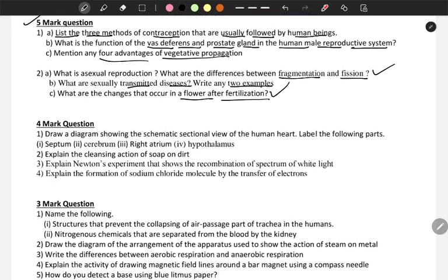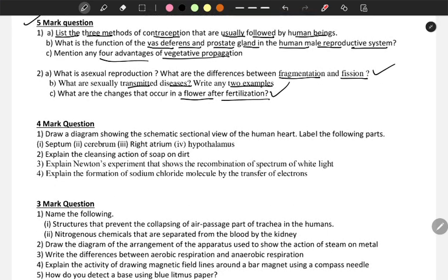Next, four marks questions. Draw a diagram showing the schematic sectional view of the human heart. In this you need to know the human heart. Then label septum, cerebrum, right atrium, and hypothalamus.